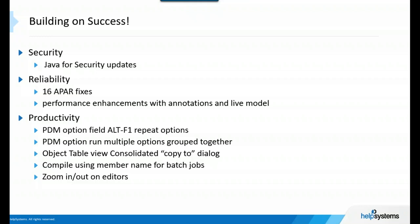In 9.6.0.6, we've added the Shift+F1 combination (Alt+F1 in RDI) — from the options field, you can put in an option, say copy option 3, do Alt+F1, and it will repeat that option through multiple items. You can also type multiple options and they'll get group-run together. We've also improved the quick filters and added an option field. Previously, the object table would pop up a separate command for each action — if you were copying 15 members, you'd get 15 commands. We've introduced consolidated views with a nice copy-to dialog.